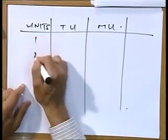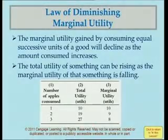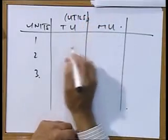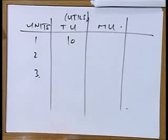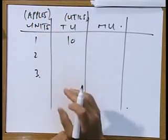In the table, if you eat the first apple — and it can be any product — the total satisfaction you gain is ten utils. What is then the marginal utility of that first apple? There is a formula you can use. Marginal utility is the change in total utility divided by the change in quantity: MU = ΔTU / ΔQ.